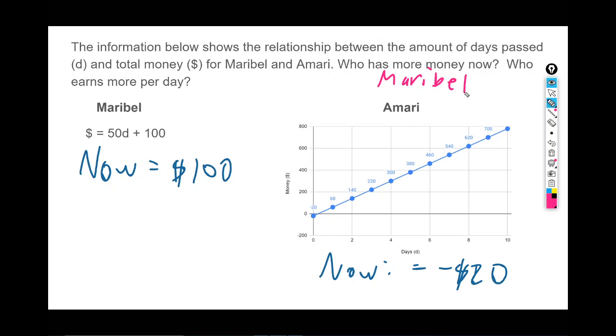The second question is who earns more per day? What is the rate of change every day—how much is each of them earning? If we go back to that y equals mx plus b equation, we know that the rate of change or the slope is how much someone's earning per some unit of time, here in this example per day.